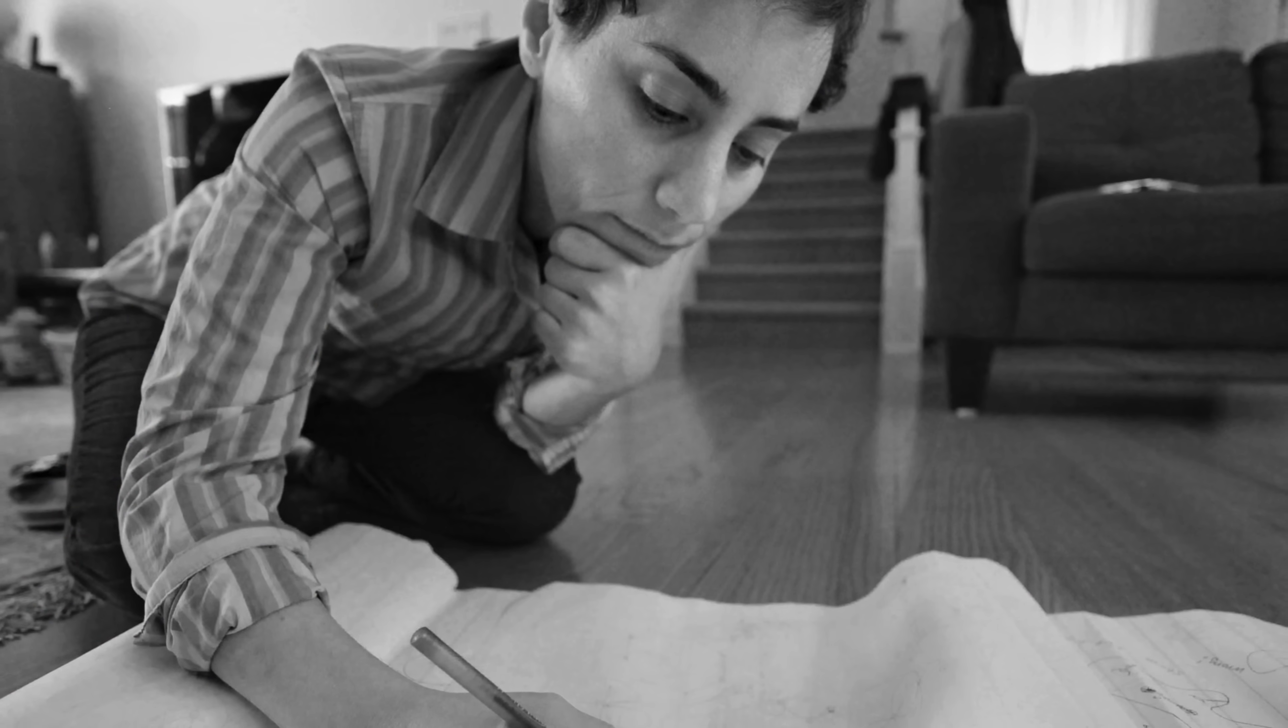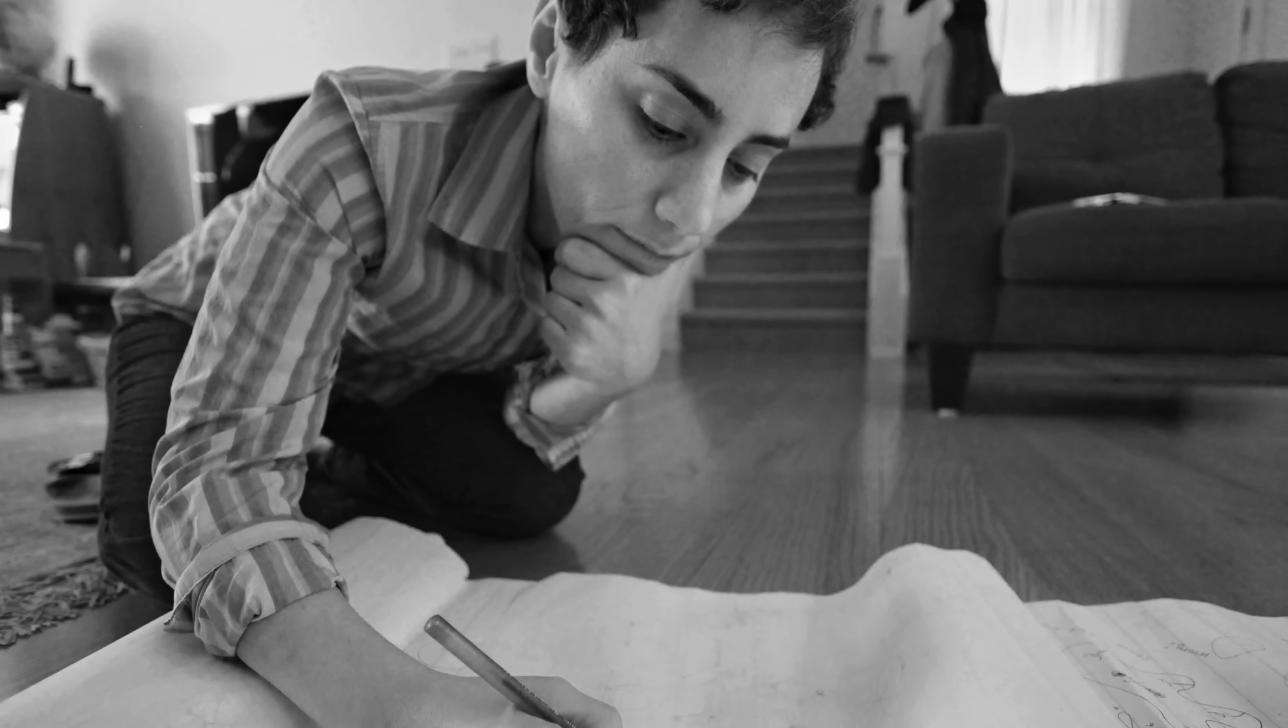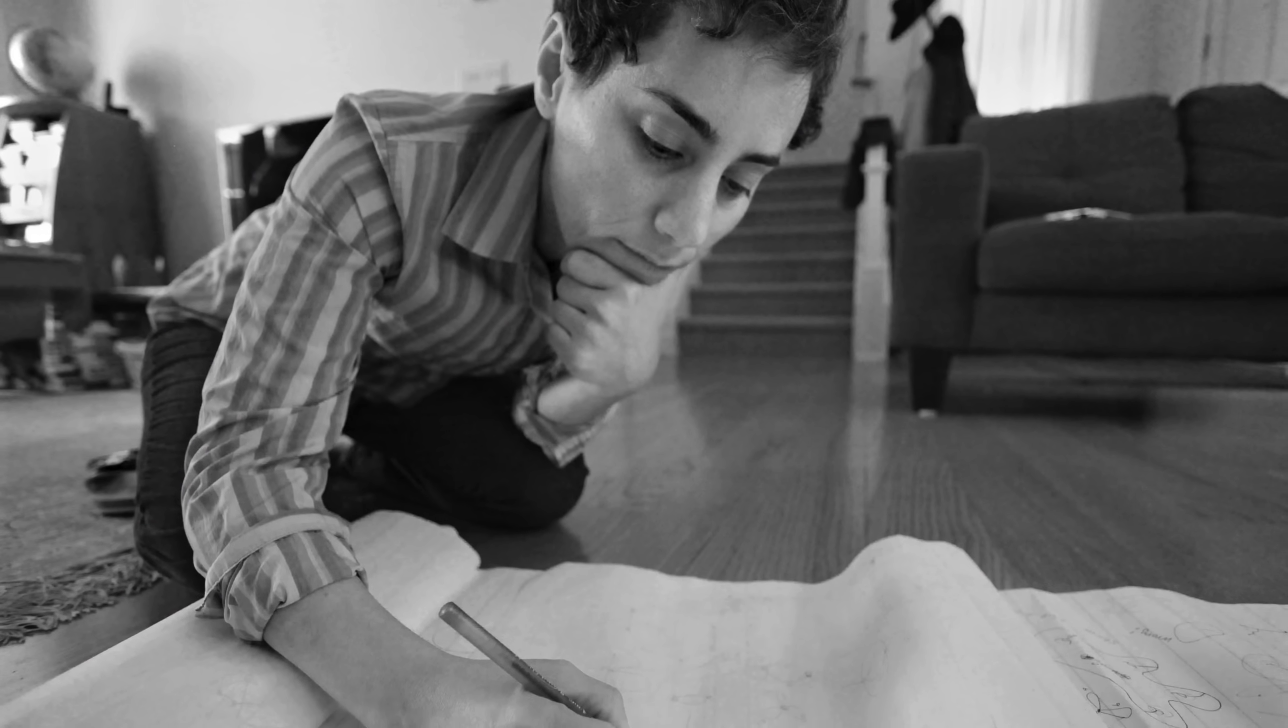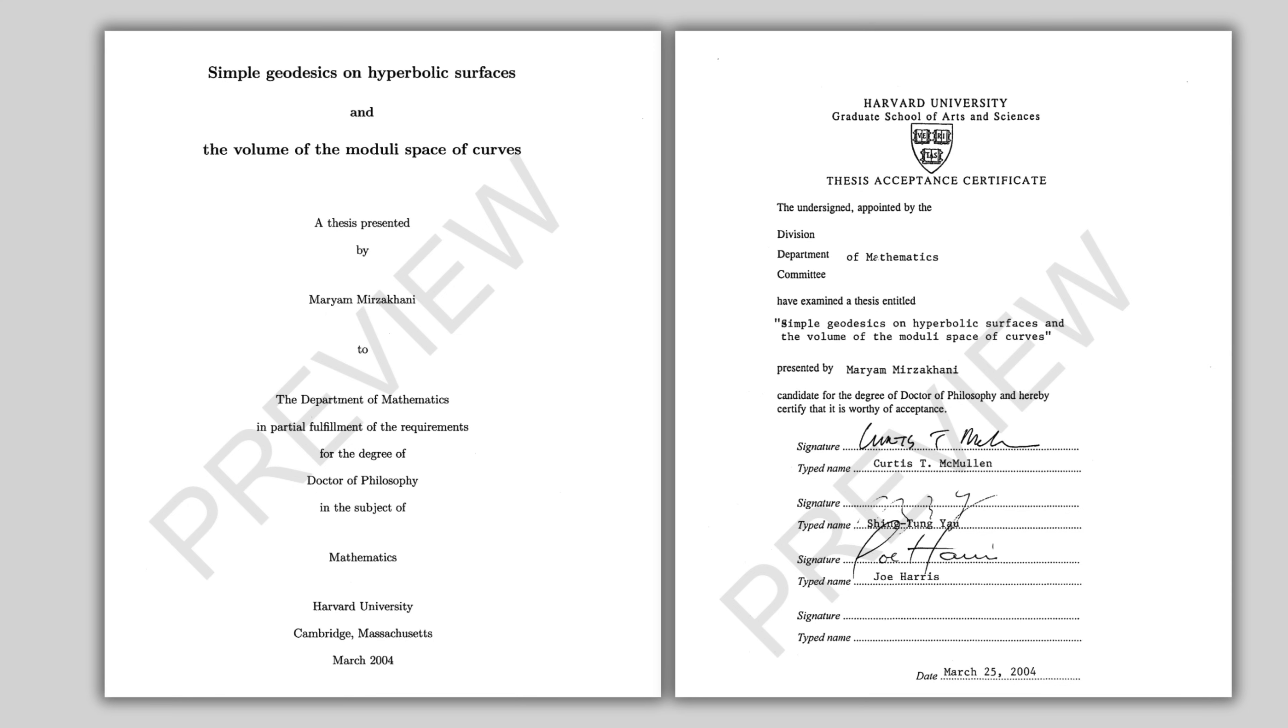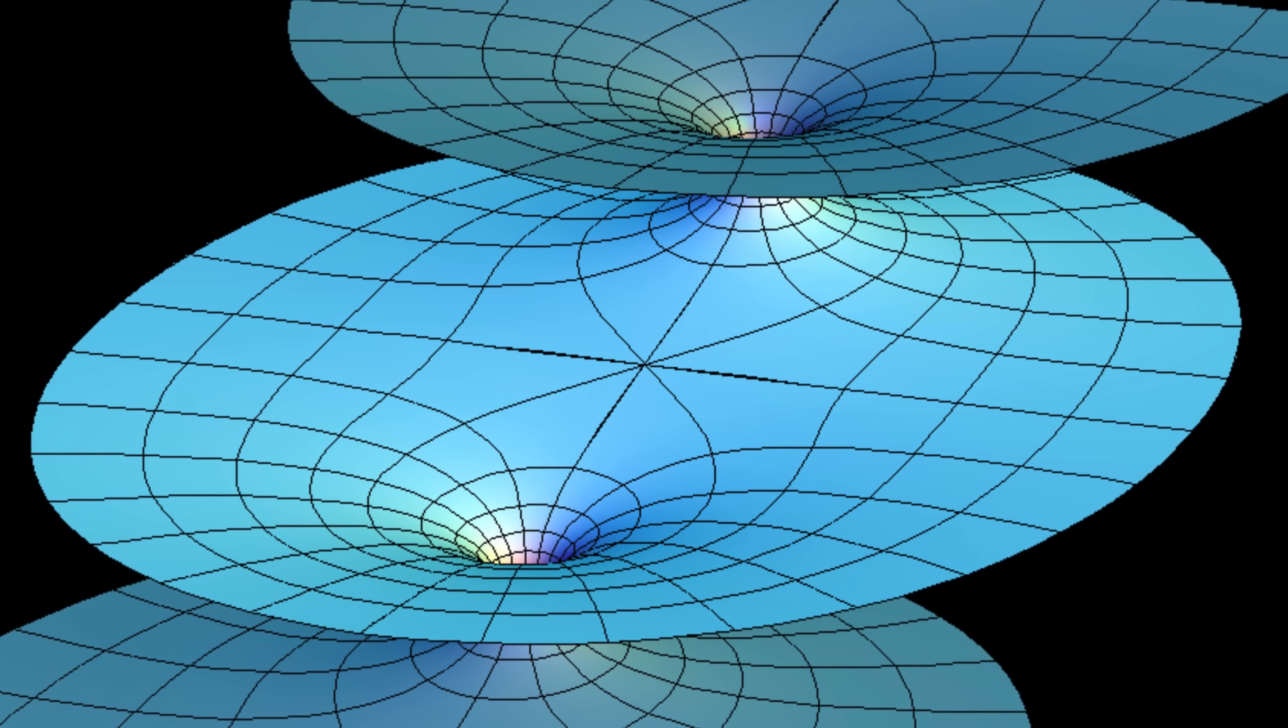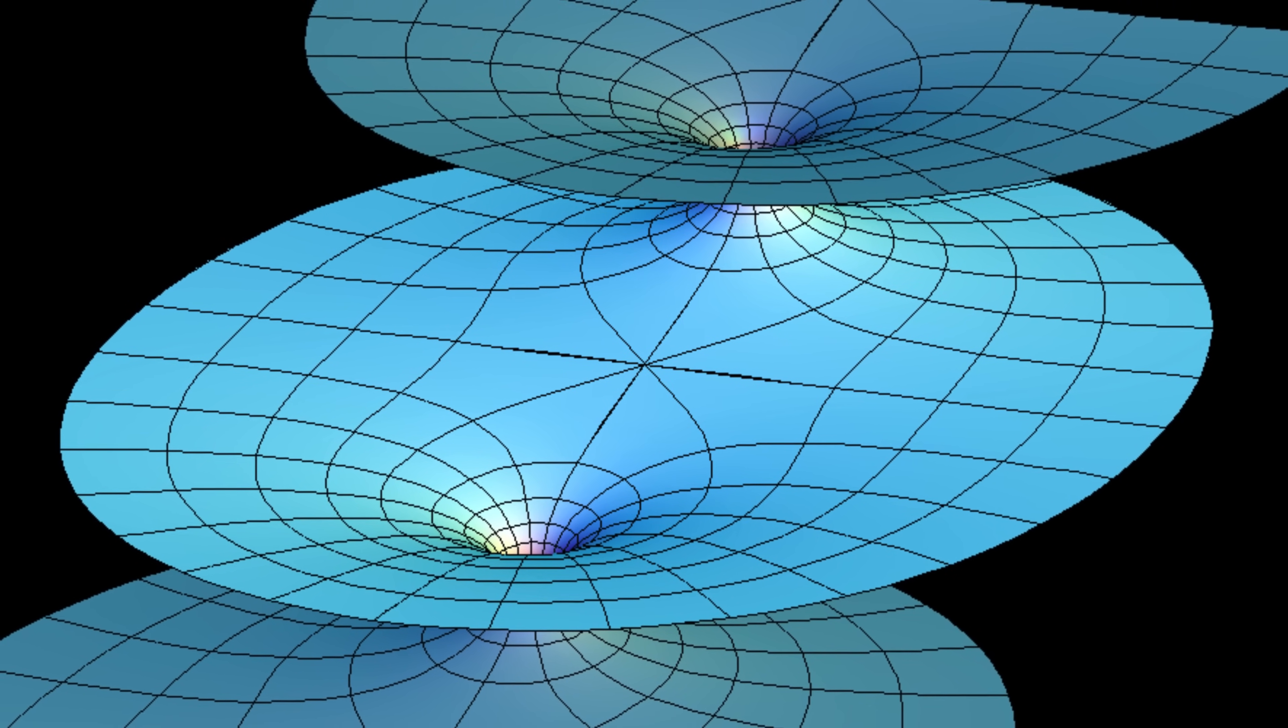Mirzakhani's extraordinary talents came fully into view during her graduate studies at Harvard University, where she worked closely with her advisor, Curtis McMullen, himself a Fields Medal recipient. Her doctoral thesis tackled challenging problems within hyperbolic geometry and dynamical systems, specifically addressing fundamental questions around geodesics. Her groundbreaking thesis provided novel methods to precisely calculate the number of these simple loops on complex surfaces, known as Riemann surfaces, based on their length.